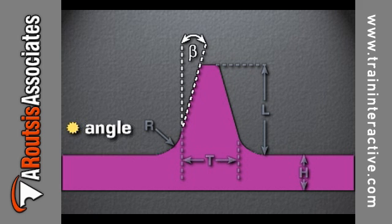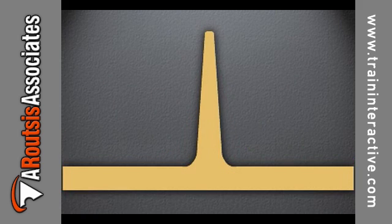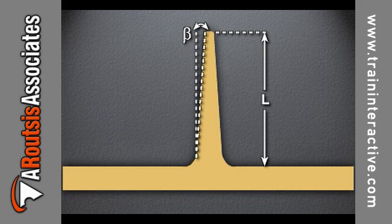Longer ribs cannot use large draft angles, represented by beta. The draft angle is used to reduce the amount of force required to remove the rib from the mold. Longer ribs are more difficult to remove during ejection. On parts with large draft angles and long ribs, the draft angle causes the top of the rib to be significantly thinner, resulting in a loss of strength and rigidity.